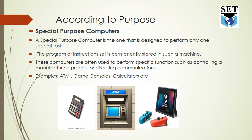The second type is the special purpose computer. As the name shows, they are designed to perform a specific or single task only. A special purpose computer is designed to perform only one special task. These are also called embedded computers, and the program or instruction set is permanently stored in such a machine.